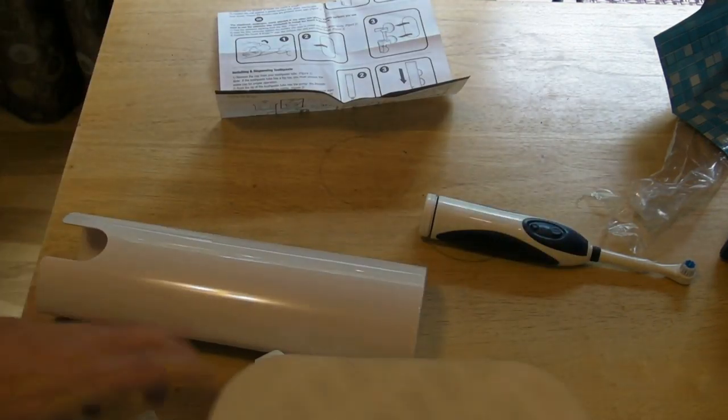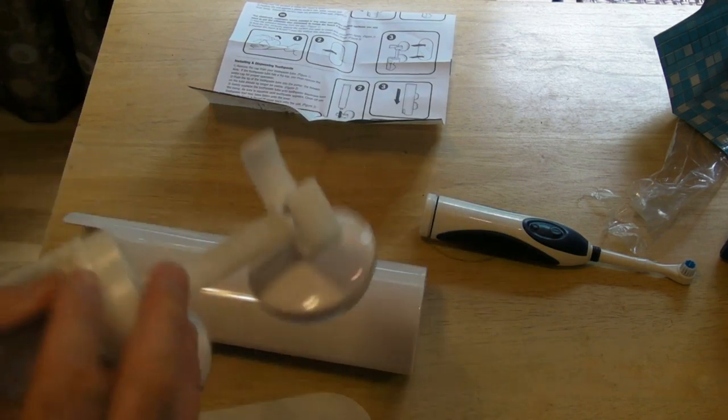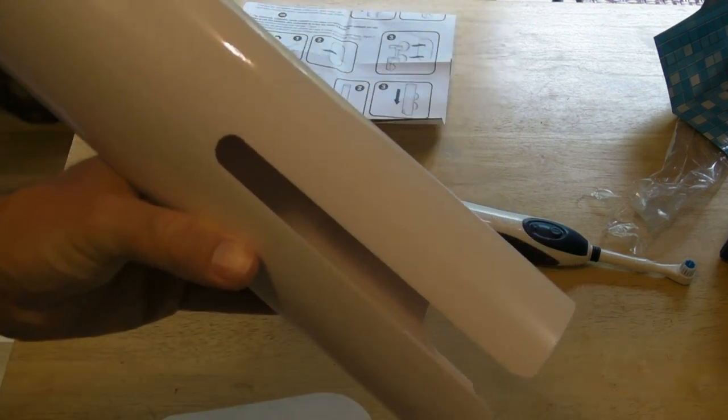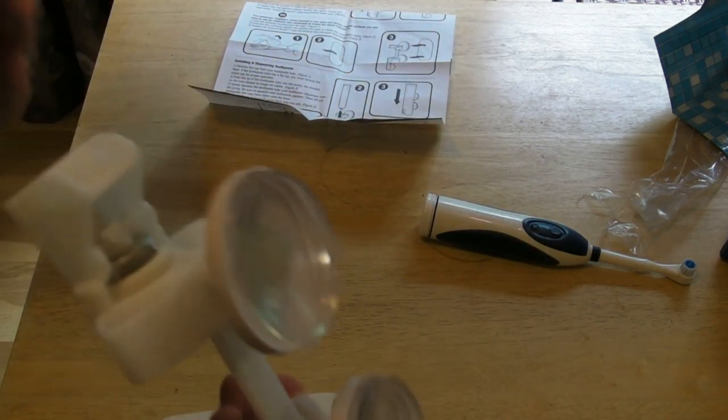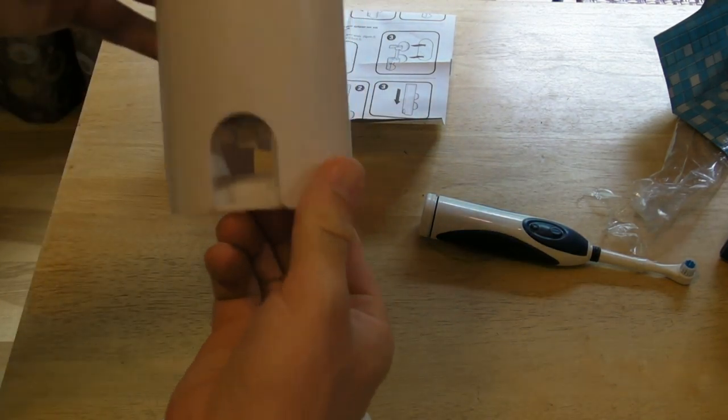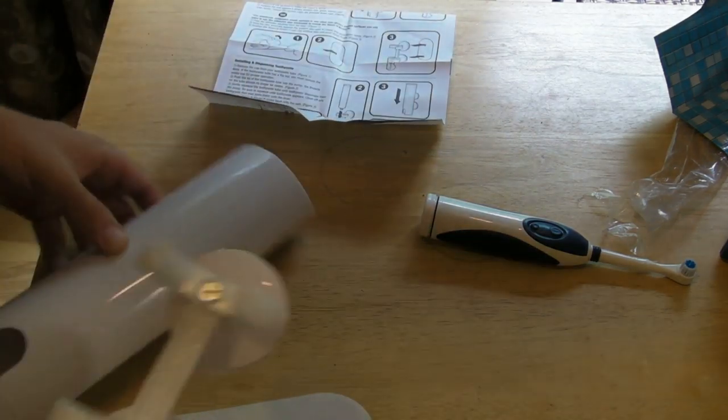You have the suction cups, and this is the dispenser, and the tube right here. So you just slide this on, like so. That sticks to your wall. That's where the toothpaste is unloaded.